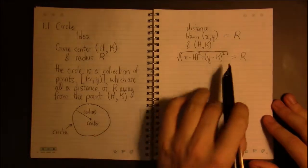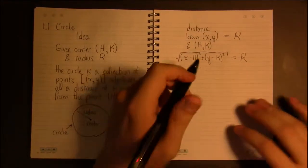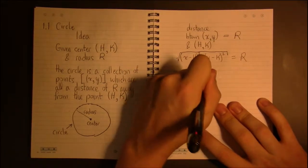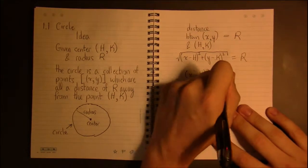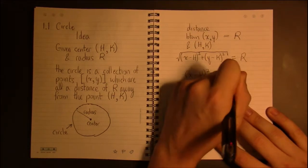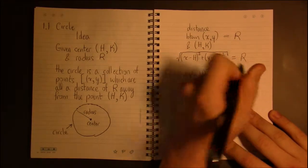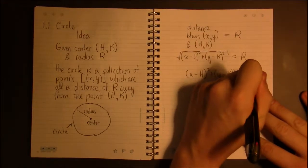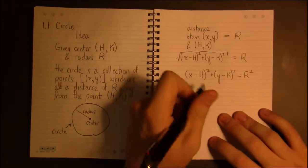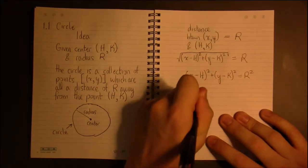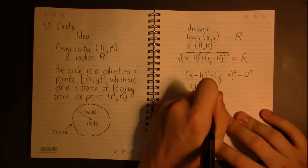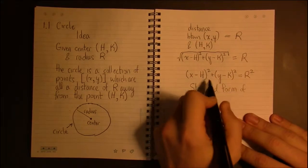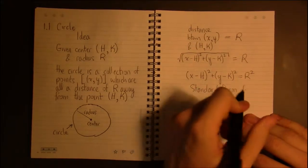So we can write this in a bit simpler way, get rid of this ugly square root. If we square both sides, then this is the standard form of a circle. Squaring the left side gets rid of the square root, squaring the right side changes it to R squared. So this is the standard form of a circle and it has a fixed center and a given radius.